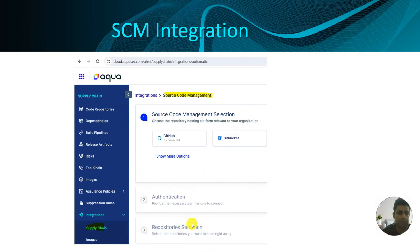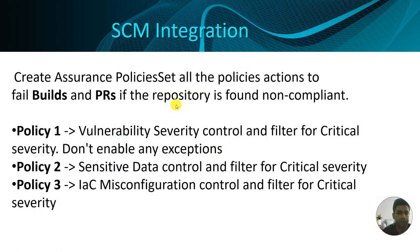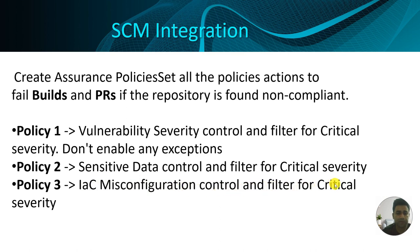Once all repositories are selected, the next module covers SCM integration where we'll be creating three assurance policy sets. For each we'll select 'fail builds and PRs' as a check. The first policy will use vulnerability severity control filtered for critical severities. The second will use sensitive data control filtered for critical severity. The third will use IaC (infrastructure as code) misconfigurations control filtered for critical severity. Let's move to the Aqua tenant to view these settings.